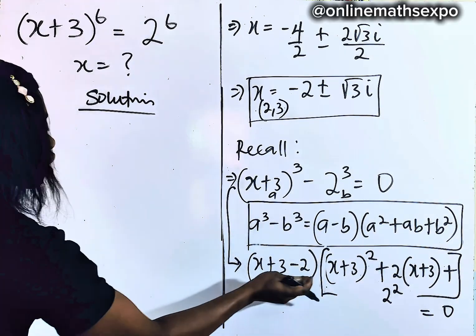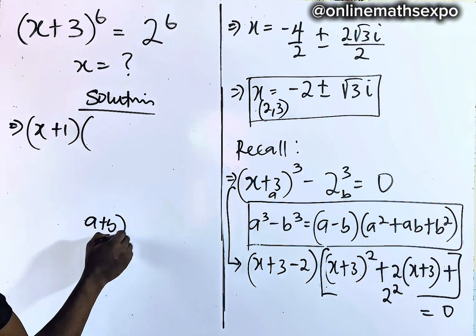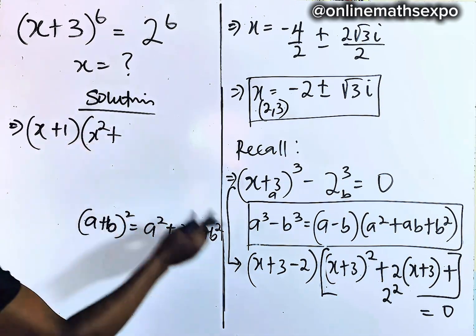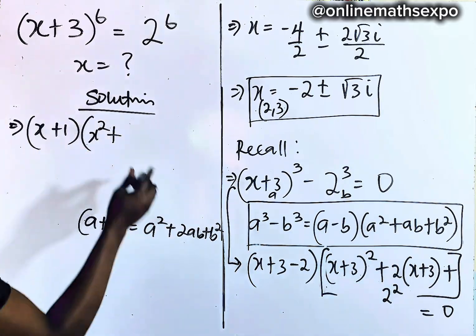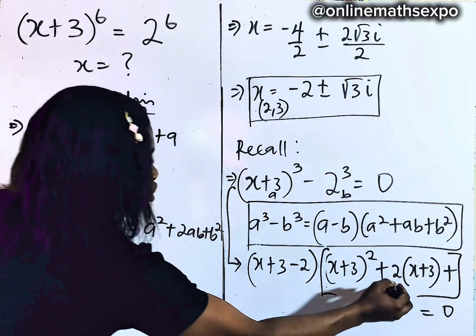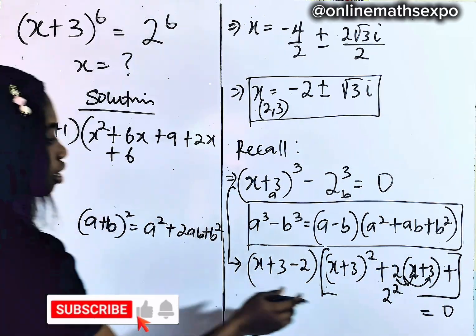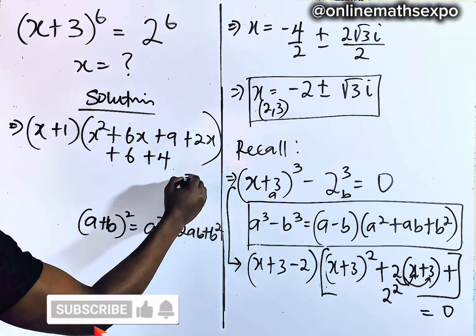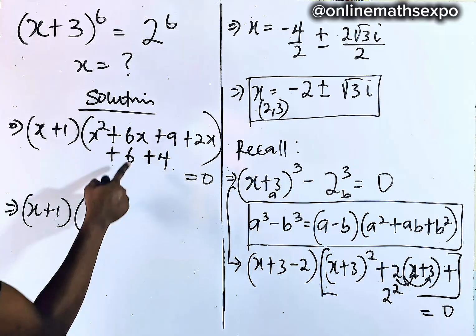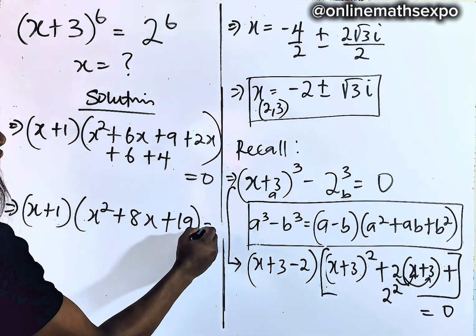So we have (x + 1) times the expanded bracket equal to 0. Expanding (x + 3)² gives x² + 6x + 9. Then distributing +2(x + 3) gives +2x + 6. And 2² = 4. Combining like terms: 6x + 2x = 8x, and 9 + 6 + 4 = 19. This gives us (x + 1)(x² + 8x + 19) = 0.